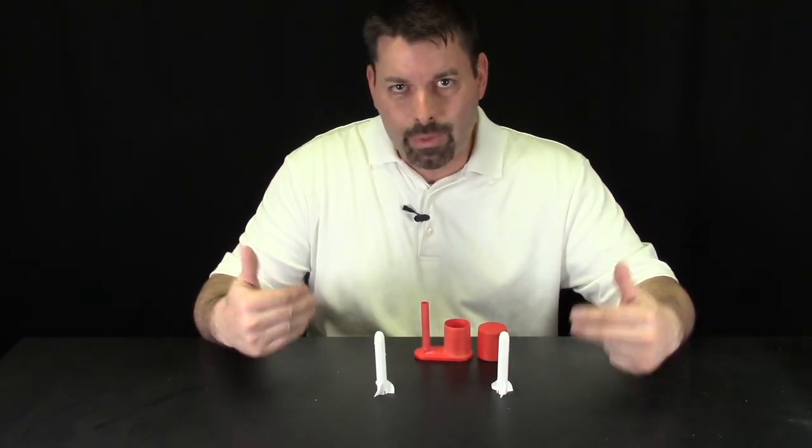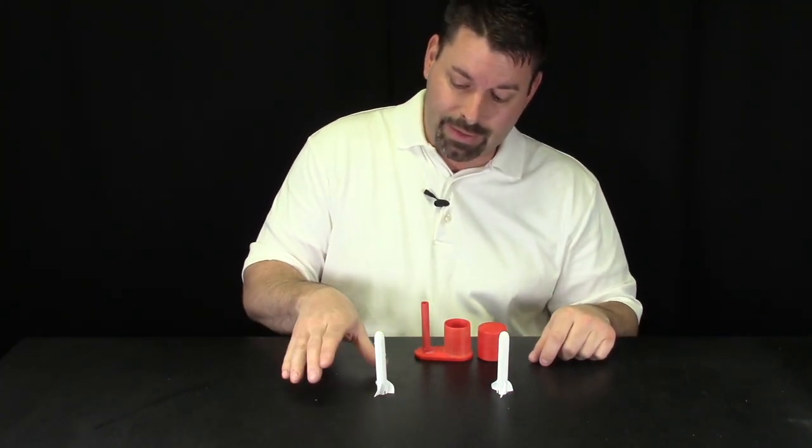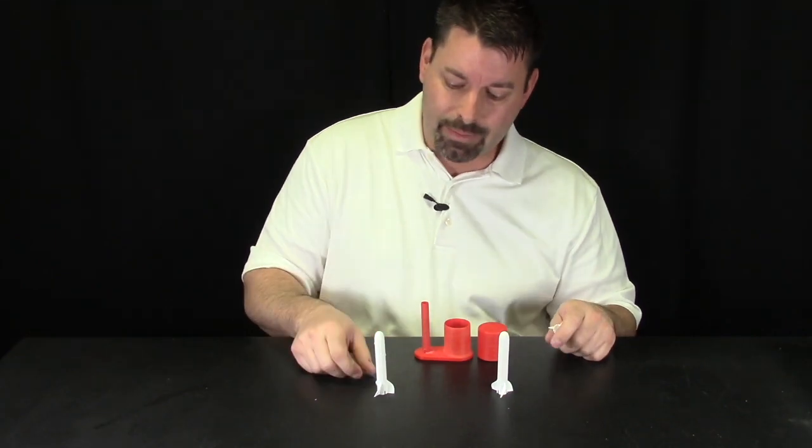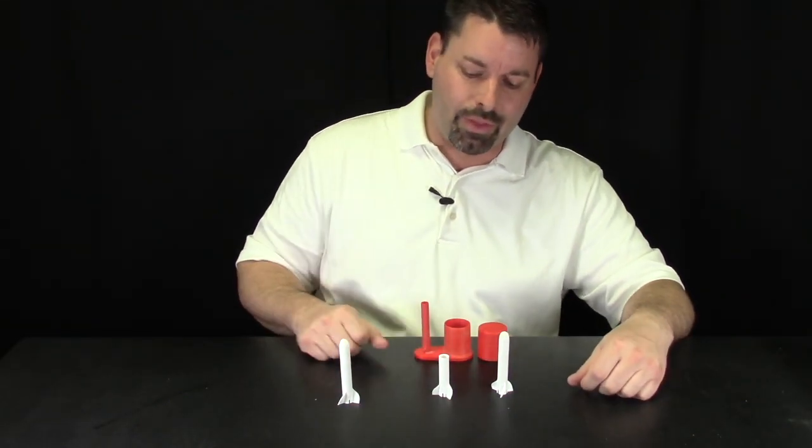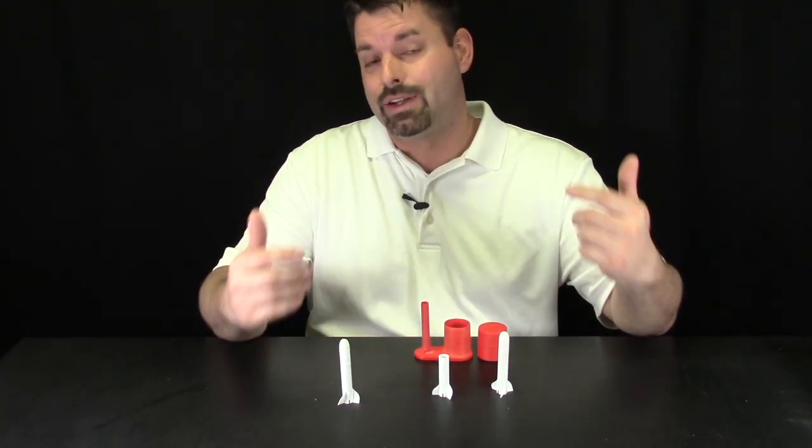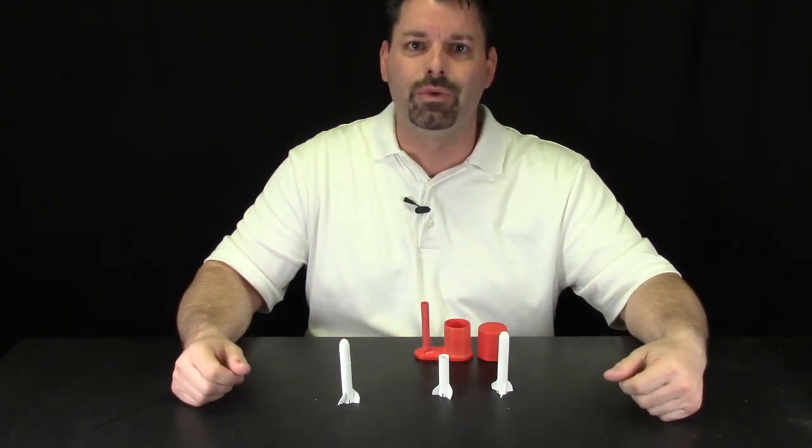Now another problem we ran into with printing the rockets is they print like this. The bottom end is attached to the printing base and sometimes it detached from the printing base and it didn't print all the way up. We saw that mistake as an opportunity to try and make our own nose cone for these rockets and now we'll show you what we did with that.